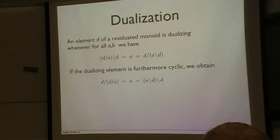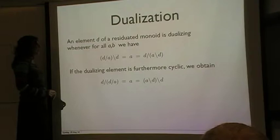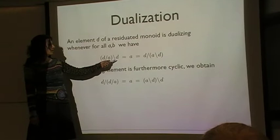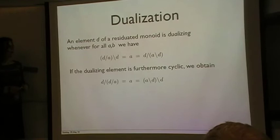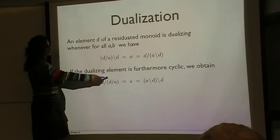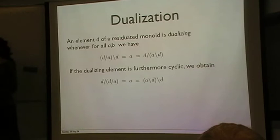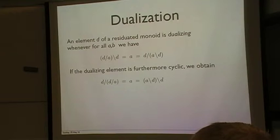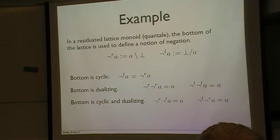Then you also define the notion of a dual element, an element T of a residuated monoid is dualizing. Whenever for all A and B, we have that A, D forward multiplication by A, backward multiplication by T is equal to A and also the other way around. And if the dualizing element is more of a cyclic, then also the same multiplications by T will result in A. Does anybody have a clue what is going on? Thumbs on down. So I thought I'd give some examples. Very good.